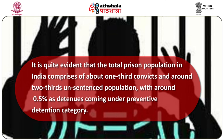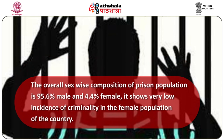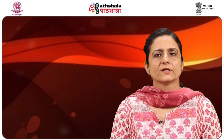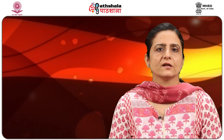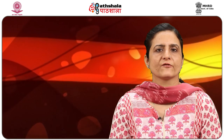The total prison population consists of one-third convicts and two-thirds under-trials — the unsentenced population. One of the reasons overcrowding is still continuing is that 66 to 70 percent of the prison population consists of under-trials rather than convicts. In terms of sex-wise composition, 95.6% were male and 4.4% were female. Women prisoners' proportion has remained between 4 to 5 percent for almost a decade, but the issues of women prisoners are highly significant. The facilities and infrastructure must meet gender-specific requirements.